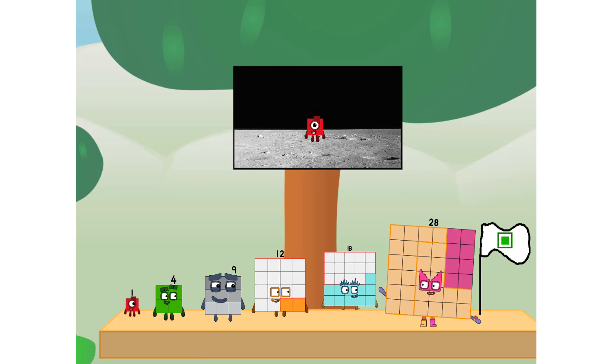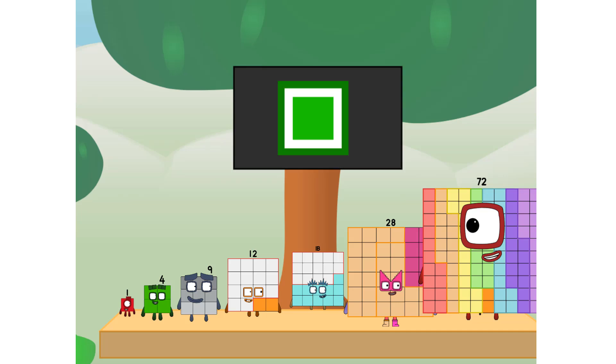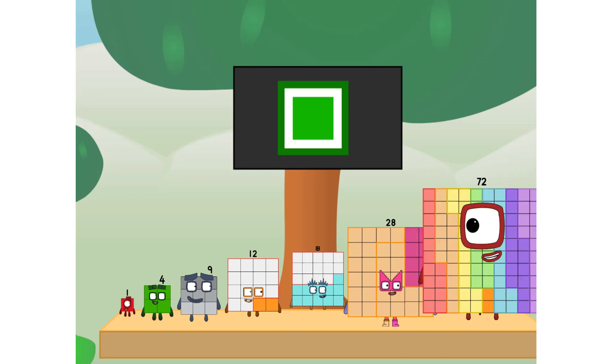The only thing left now is to plant the square club flag. Numberland, we have a problem. I forgot the flag. Don't worry little one, I'll take care of this. 72, and I promise, no rockets, square power only.